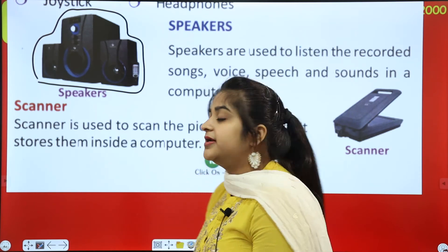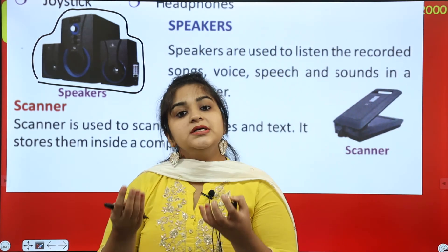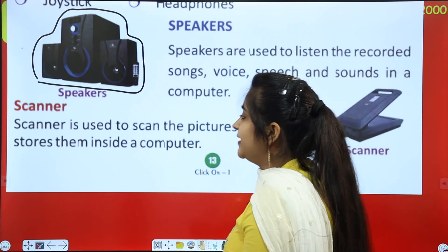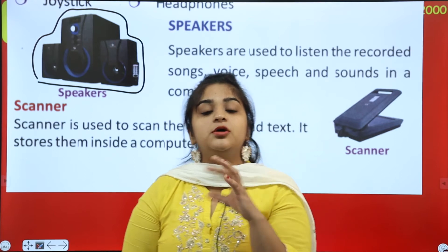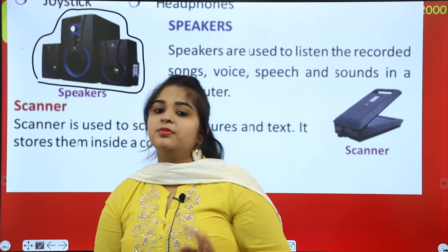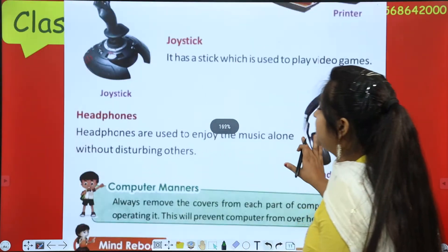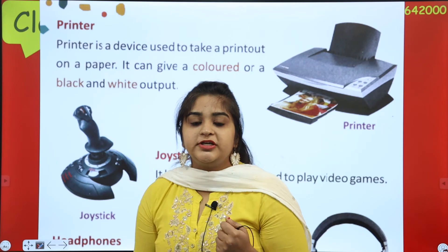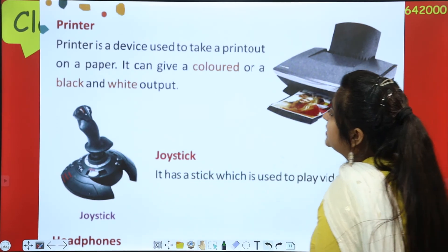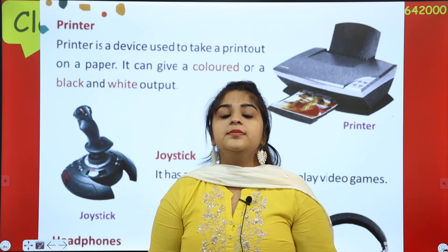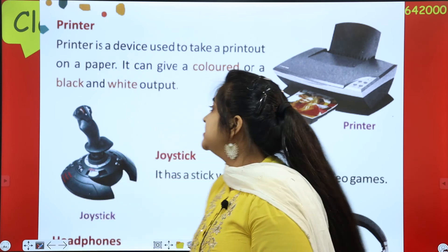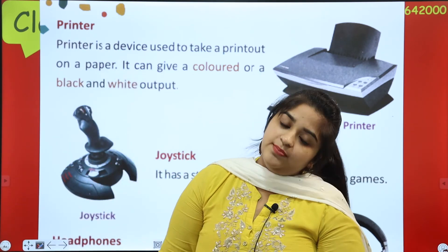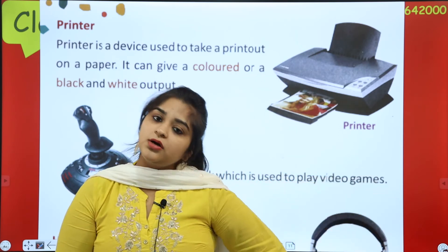Then comes your scanner. A scanner is used to scan pictures and text and store them inside the computer. Next is the printer — a device used to take a printout on paper. It can give a colored or black-and-white output, depending on the ink used.